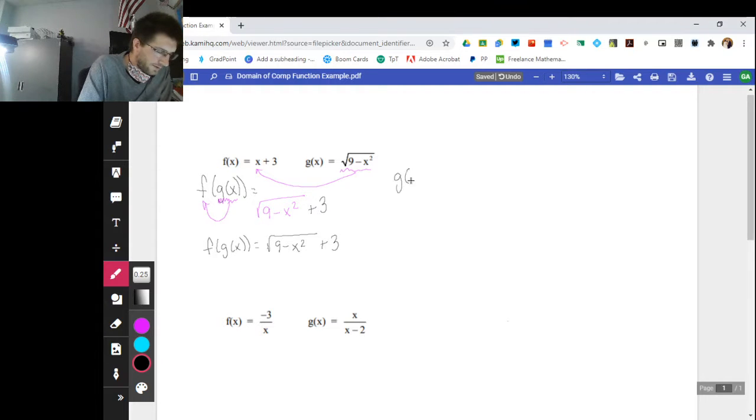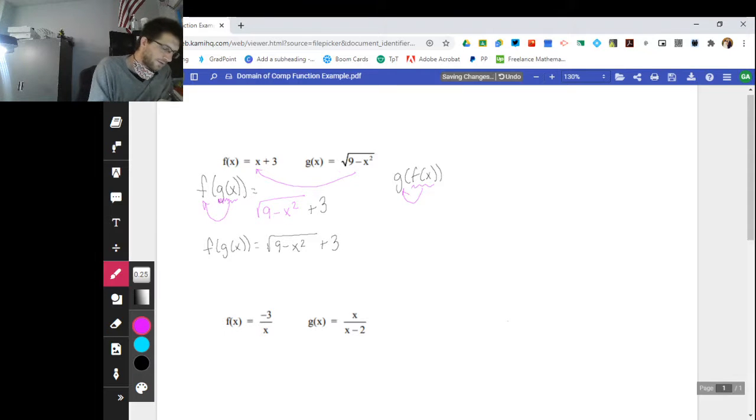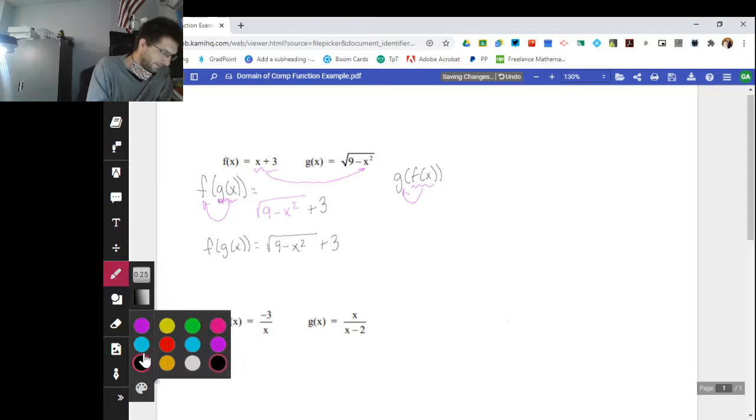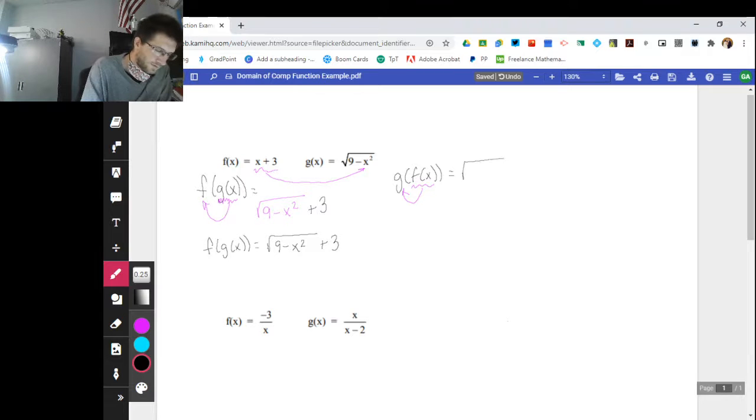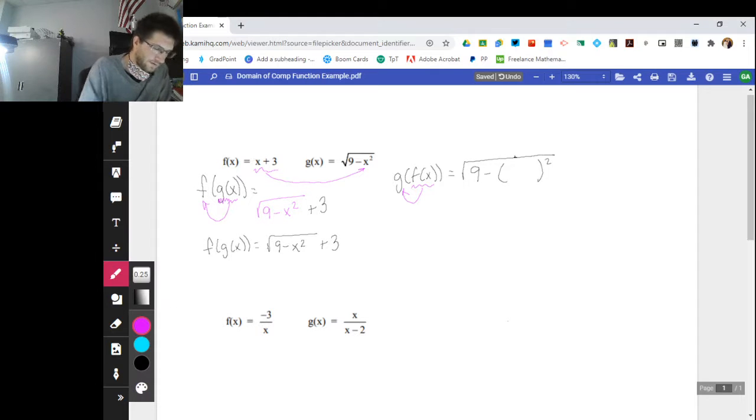As far as g of f of x goes, now I'm going the opposite way. I'm putting this f of x into my g function. So I'm going to go back up here. I'm going to take this f of x function and put it over here in for x. So if I have the square root of 9 minus, and I have this x squared, and I'm replacing x with this entire function, x plus 3.